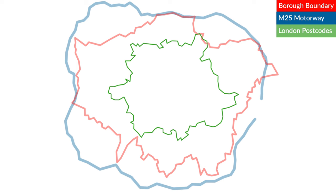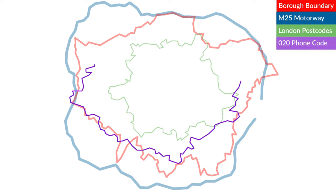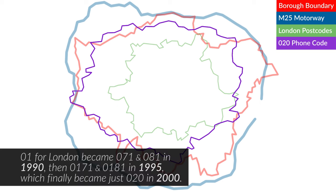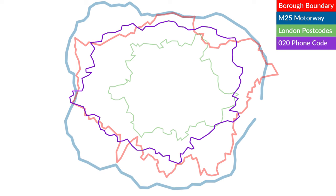So how about this instead? This is the London telephone code boundary — the area within which telephone numbers start with the London prefix of 020. It's not actually split into 0207 and 0208 like some people think it is. Now this is obviously bigger than the London postal area, but still not quite as big as the spread of the London boroughs.